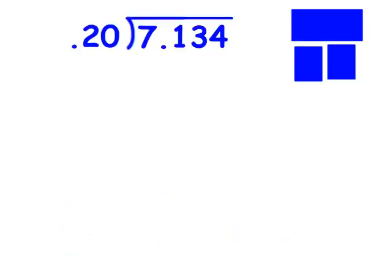The first thing I'm going to do is get rid of the decimal point in my divisor. This time, I have to move it two spaces to get it to the end, and that's the only way to make the decimal point disappear. And if I move this one two places, I have to move this one two places. So here is my new problem.